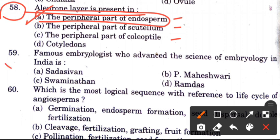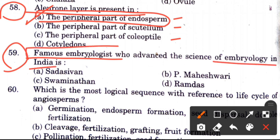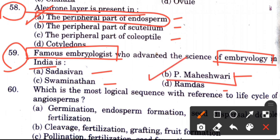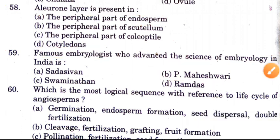Question 59: The famous embryologist who advanced the science of embryology in India — options are P. Maheshwari, Swaminathan, and Ramdas. The answer is B, P. Maheshwari, who is the father of embryology in India.